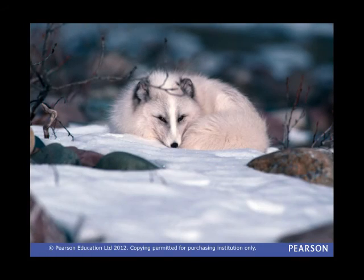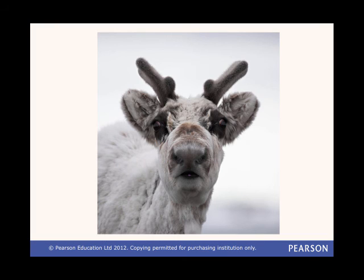Animals that live in the tundra are adapted to the very cold winters and short summers, and to the very low biodiversity. But because they are so well adapted to these conditions, they are vulnerable to any changes. This makes the polar region a fragile environment.